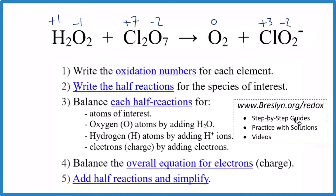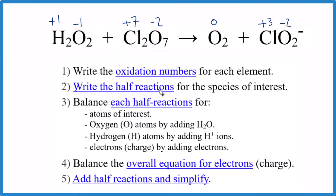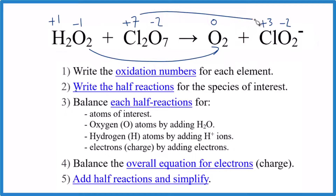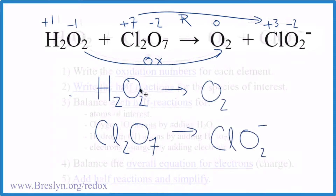The second thing we do is write the half reactions. We can see that oxygen goes from negative one to zero, and chlorine goes from plus seven to plus three. Be careful — H₂O₂ is an exception where oxygen is negative one. The plus seven gets smaller, so chlorine is reduced, which means oxygen is oxidized — its oxidation number gets bigger. Let's write those half reactions.